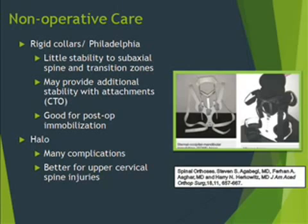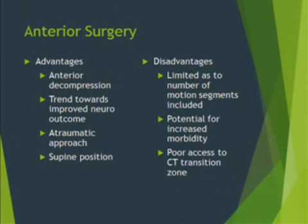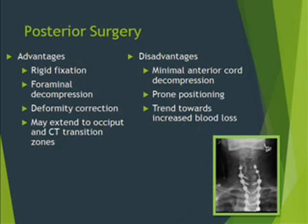With regard to deep vein thrombosis, prophylaxis is less often used in our country. However, a study done at our center found that rates of deep vein thrombosis, even though they may be lower than in the West, are still high, and we should use prophylaxis. The best approach is a combination of mechanical and pharmacological thromboprophylaxis using low molecular weight heparin, though oral anticoagulants are an option.